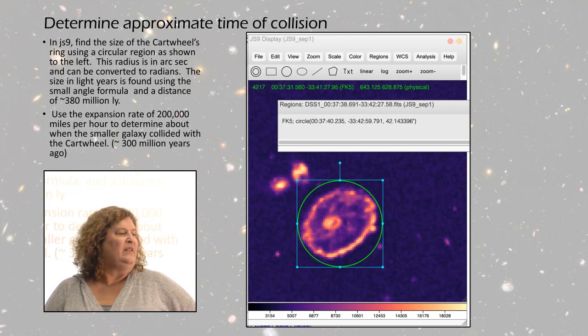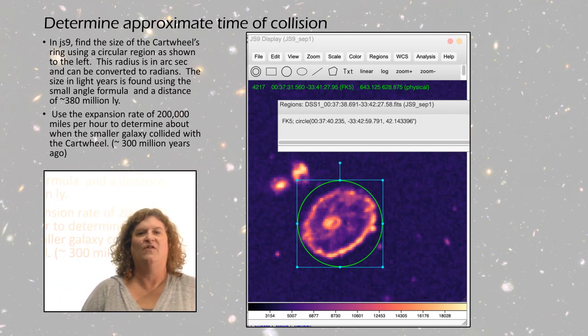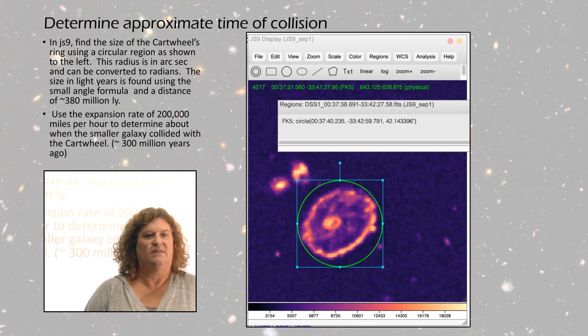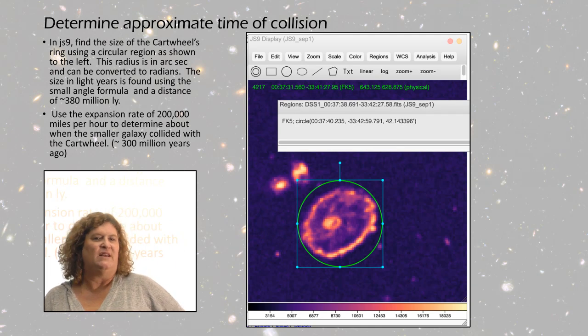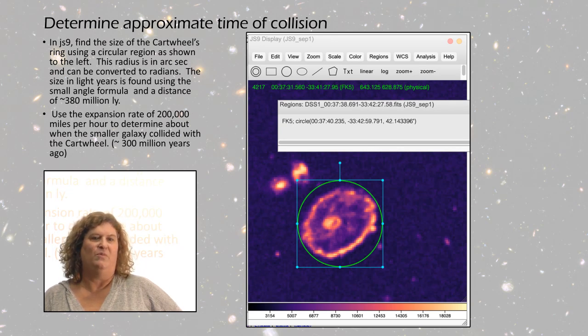In the gray box, the last number is the radius of the region in arc seconds, which you can convert to radians, use the small angle formula, and the distance to the Cartwheel Galaxy, which is 380 million light years. Then you can figure out the size in light years. Through other means, they've determined the expansion rate is about 200,000 miles per hour. So if you have its size and the expansion rate, you can approximate when the smaller galaxy collided with the Cartwheel, which comes out to about 300 million years ago.